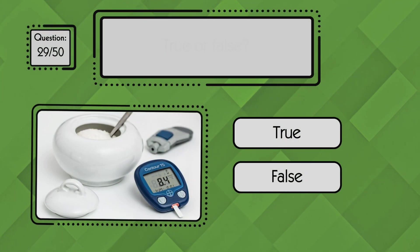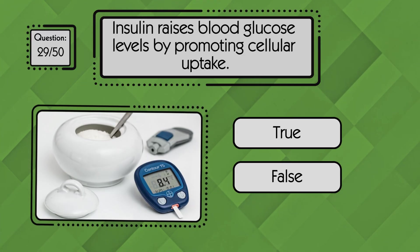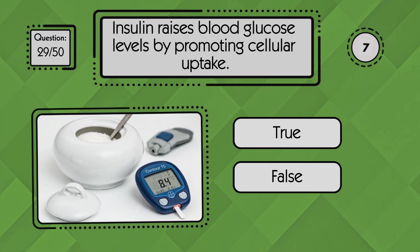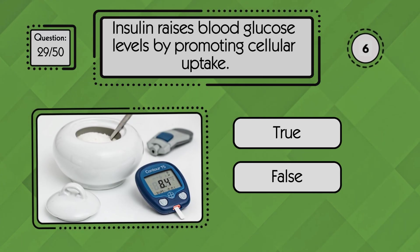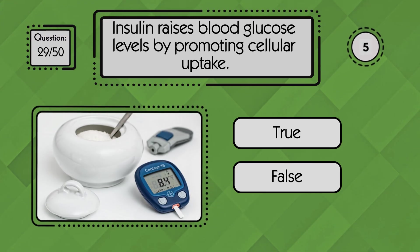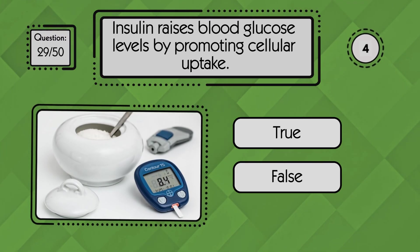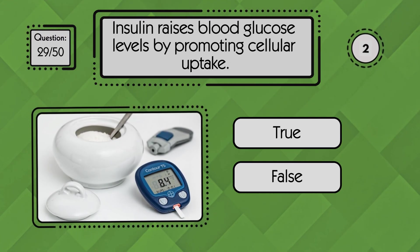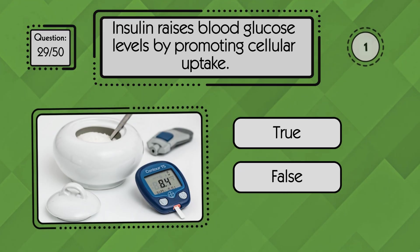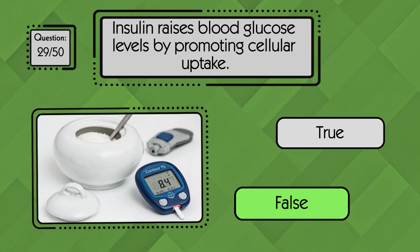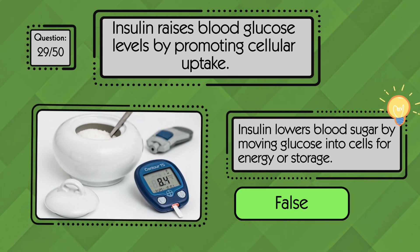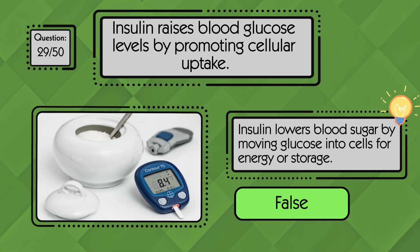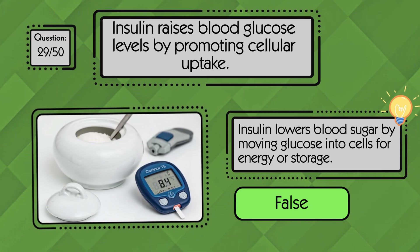True or false: insulin raises blood glucose levels by promoting cellular uptake. False — insulin actually lowers blood glucose levels by helping cells absorb glucose from the bloodstream.